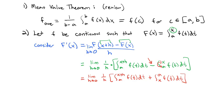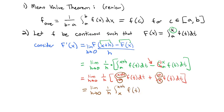What's nice is that starting from x up to a, and then from a up to x plus h, there's no gap between them. So we can write that as a single integral, which gives us the limit as h goes to 0 of 1/h times the integral from x to x plus h of f(t) dt.